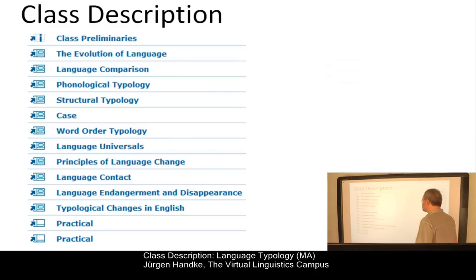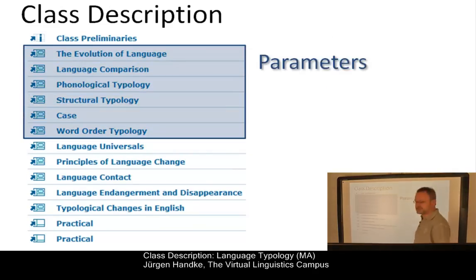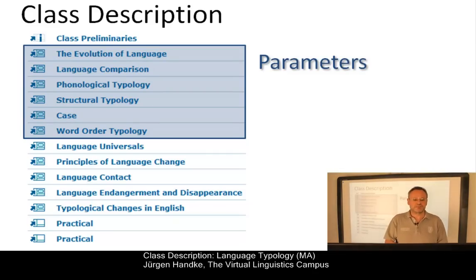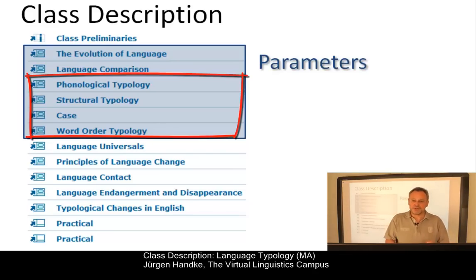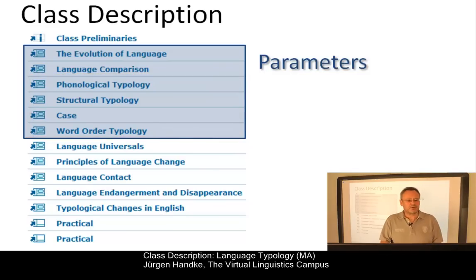The class is subdivided into three parts. After an overview of the evolution of language and the early principles of language study with a focus on the comparative method, we will examine and apply the main parameters of language typology, from phonology to syntax. This includes the discussion and exemplification of as many languages as possible.